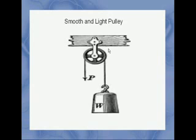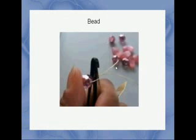A smooth and light pulley is a pulley that is smooth — i.e. no friction — and light, meaning its mass is small in comparison to the other masses involved, so you ignore the mass. A bead is a particle which can be threaded and moved freely along a wire or string.